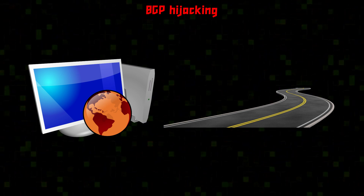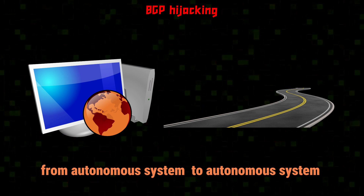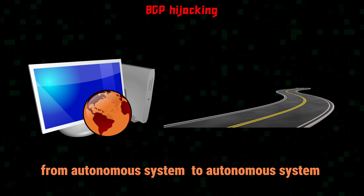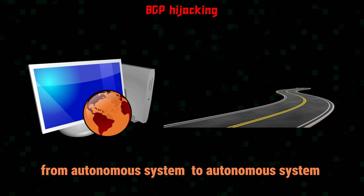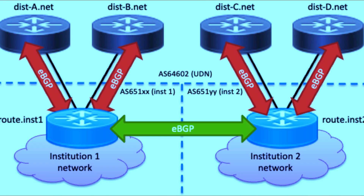BGP always favors the shortest and most direct path from autonomous system to autonomous system, in order to reach IP addresses via the fewest possible hops across networks. Each BGP router stores a routing table with the best routes between autonomous systems. The autonomous system is a large network or group of networks managed by a single organization, and may have many subnetworks, but all share the same routing policy.